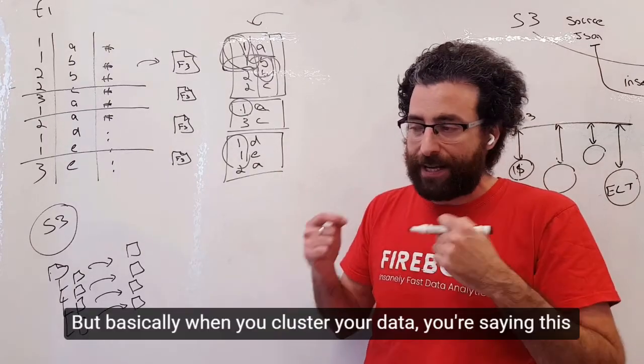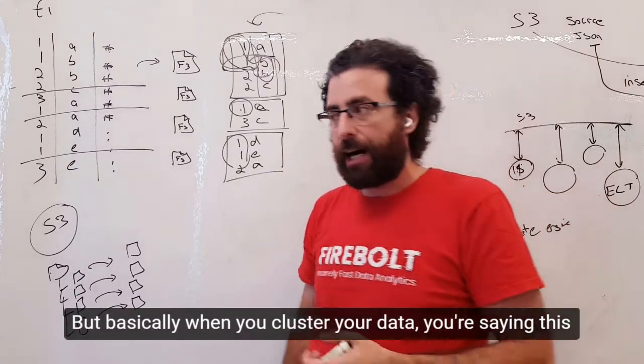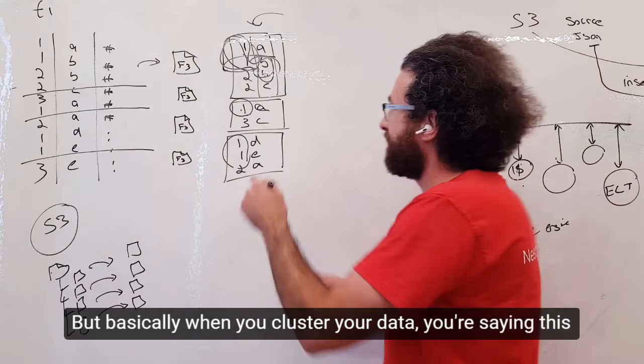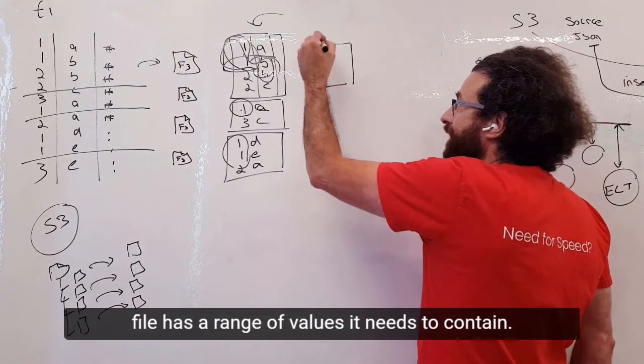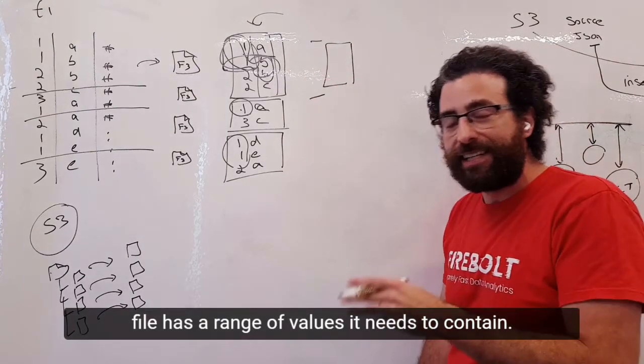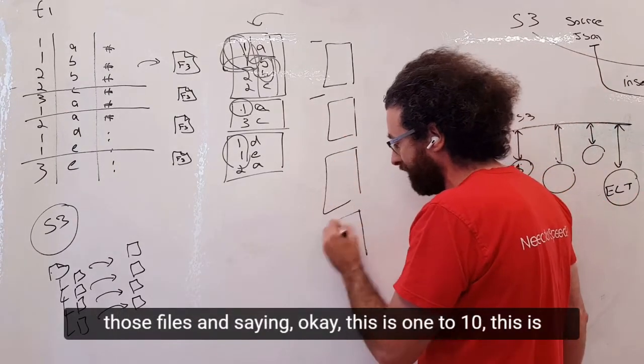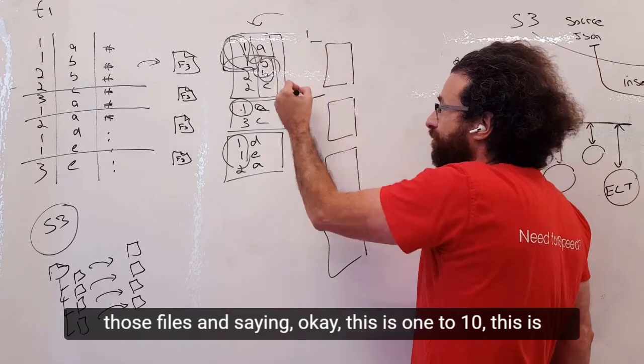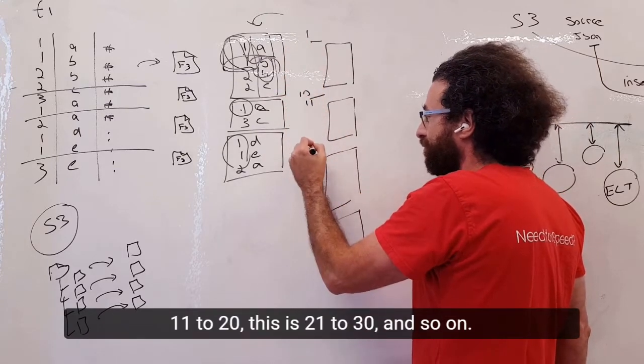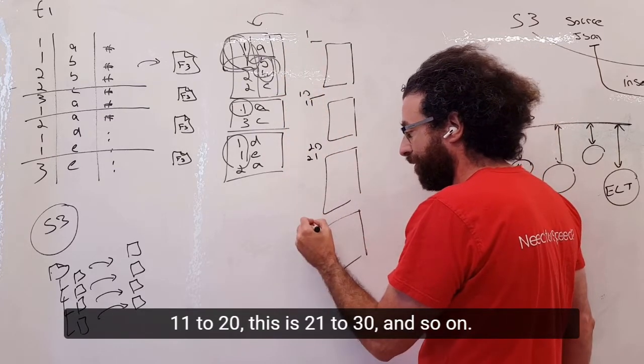Basically when you cluster data, you're saying this file has a range of values it needs to contain. When I cluster my whole table, I'm generating those files and saying, okay, this is 1 to 10, this is 11 to 20, this is 21 to 30, and so on.